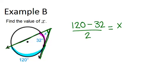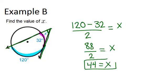It's just 120 minus 32 divided by 2 will equal our angle x. So we subtract 120 minus 32, and you get 88 divided by 2 is 44. So x equals 44 degrees.